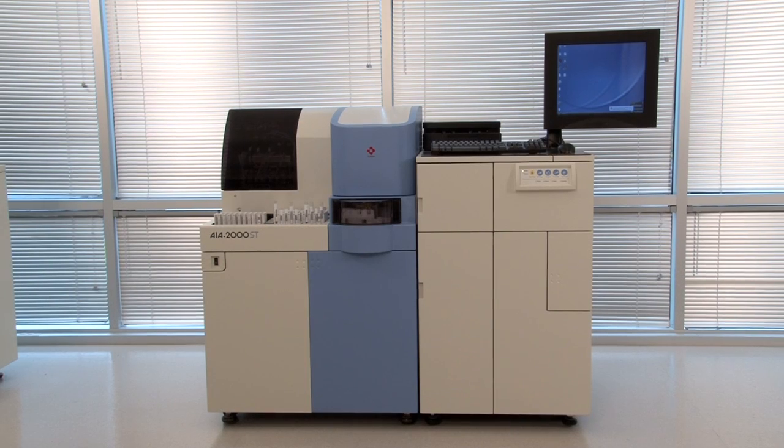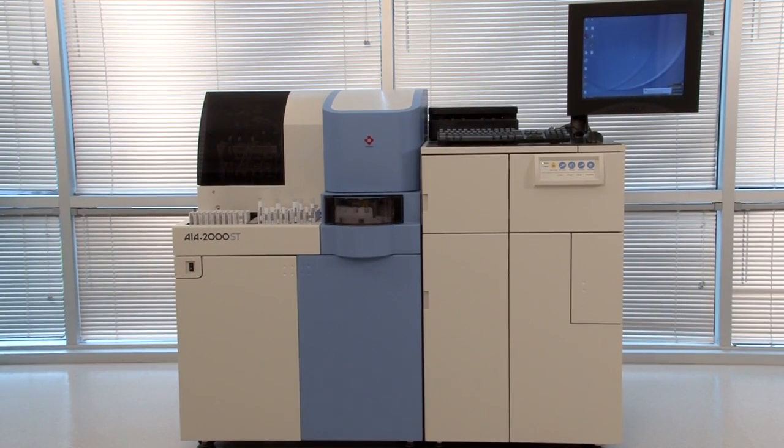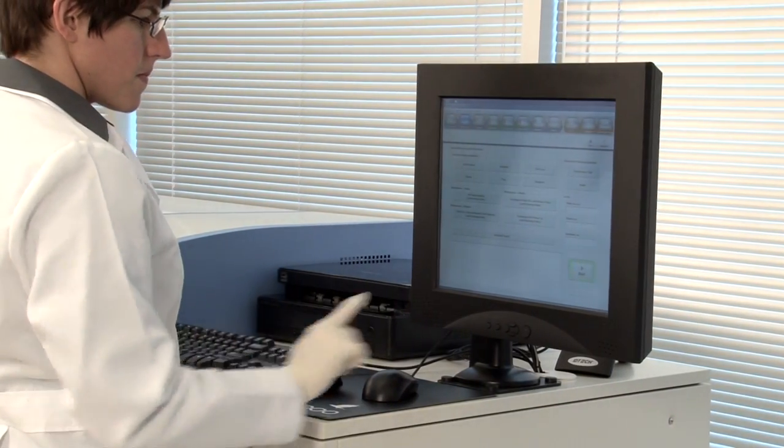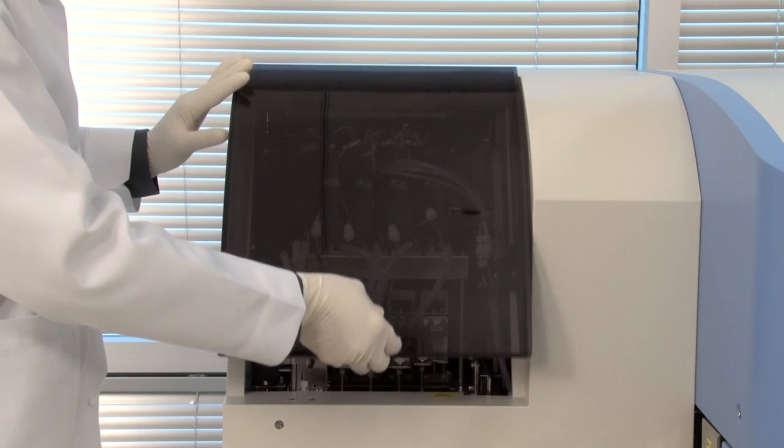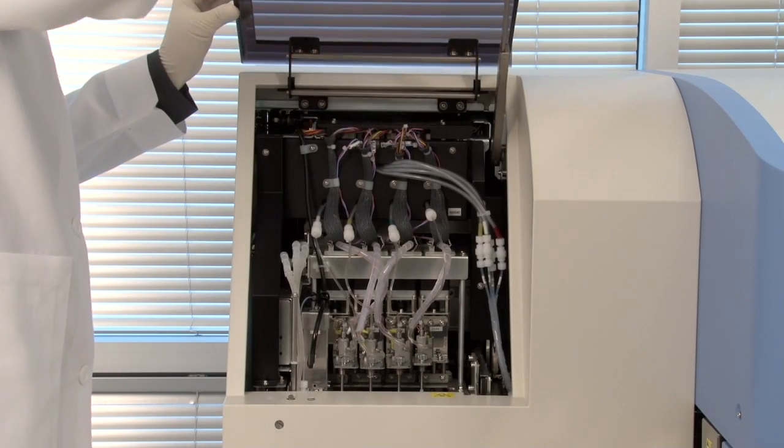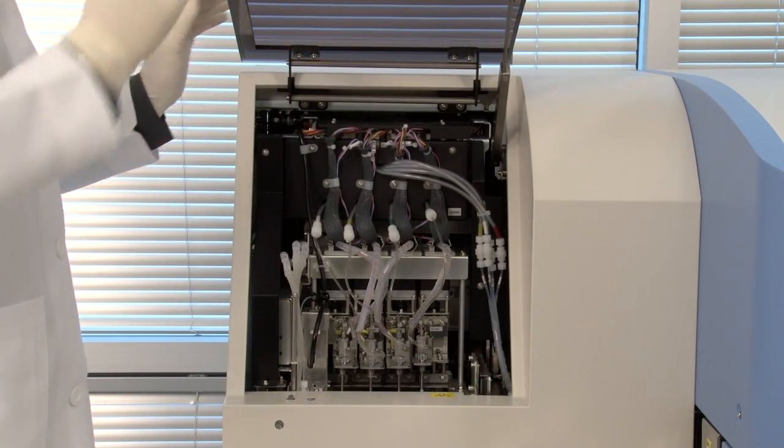Daily maintenance on the AIA-2000 is totally automated and requires only five minutes per day at system start-up. Weekly maintenance requires only a few minutes of operator time and involves a simple cleaning of the wash probe.